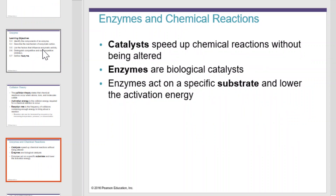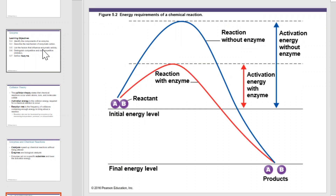Enzymes are catalysts. Catalysts speed up chemical reactions without being altered themselves. Enzymes are a form of biological catalyst. They are made of protein and they act on a specific substrate and lower the amount of energy needed to start a chemical reaction, also known as activation energy. This graph illustrates two reactions proceeding from left to right, one using an enzyme and one without. The reaction with an enzyme uses significantly less activation energy and therefore will proceed at a higher rate.